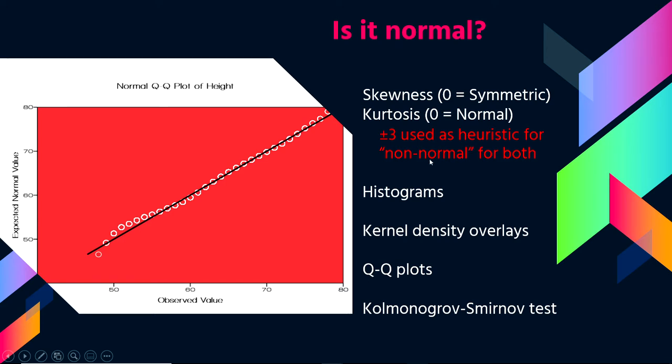As a general rule, plus or minus three for either of these is a good heuristic for something being too far from normal for us to call it approximately normal. So if we're within this plus or minus three range, we probably are okay to kind of squint and pretend that things are normally distributed.